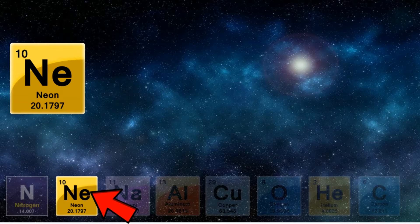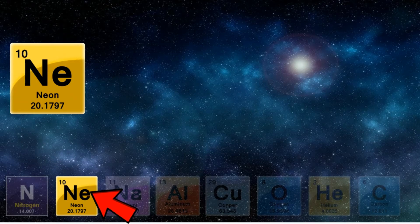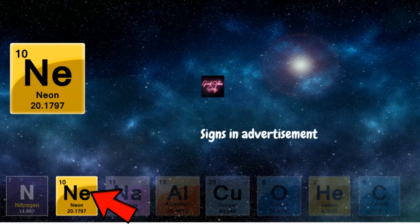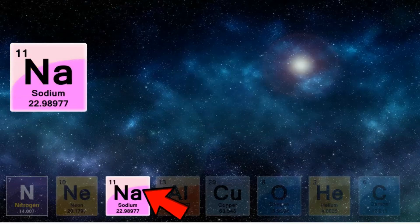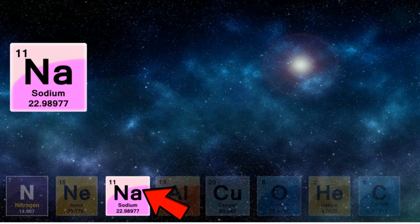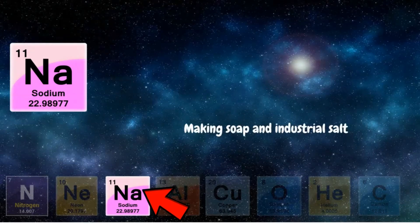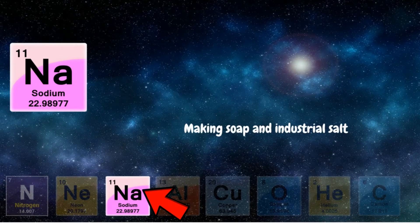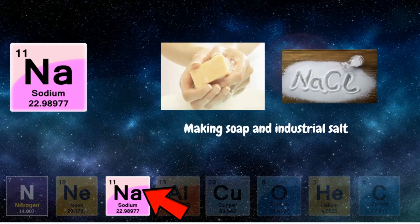Neon with a chemical symbol of Ne. This element adds more light or vibrancy to sign advertisements. Sodium with a chemical symbol of Na. It is an important component of sodium chloride used in making soap and used as industrial salt.